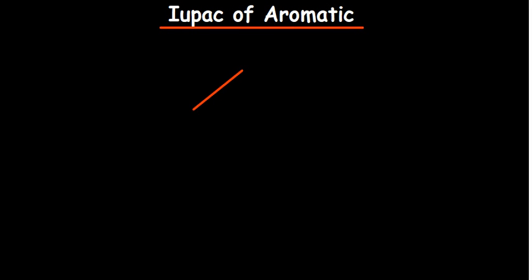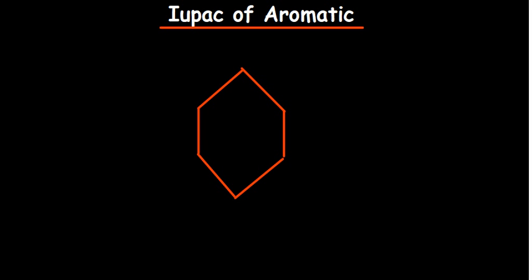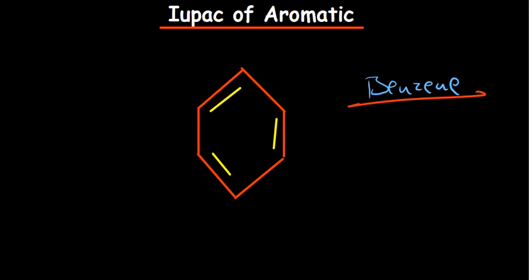How do you name benzene compounds? That's what we're going to talk about in this video. A benzene structure, or aromatic hydrocarbon, is a six-carbon ring. We expect three double bonds, and there should be a hydrogen at each point. This is called benzene — take note of that.